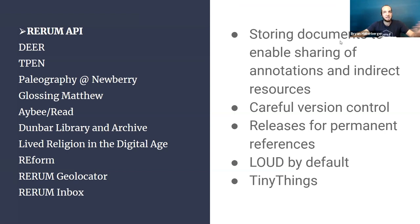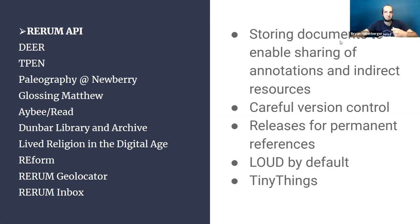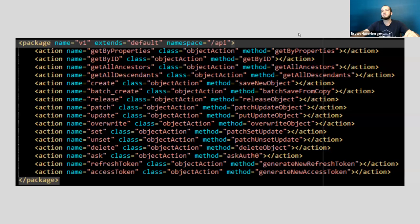We also allow applying a context through HTTP request headers — a way to trigger a switch to treat all your data as linked data even if you don't have a context yet. All the hooks are available: GET my properties, GET by ID, GET history, CREATE, RELEASE, PATCH, UPDATE, OVERWRITE, SET, UNSET — all the unit API actions you would imagine.